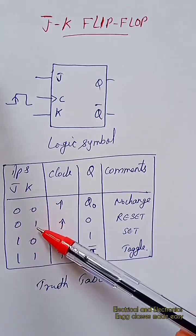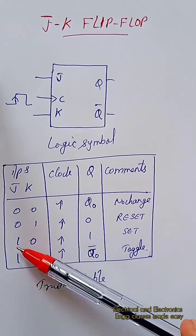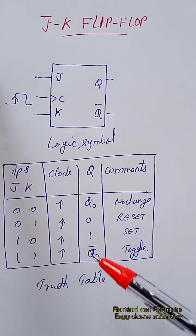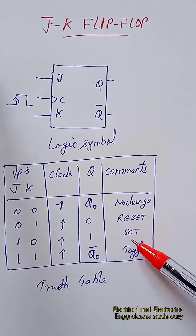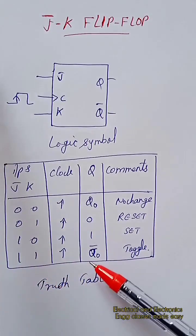When J is one and K is zero, the output is one, that is the set state. When J and K are both one, the output is Q zero bar.